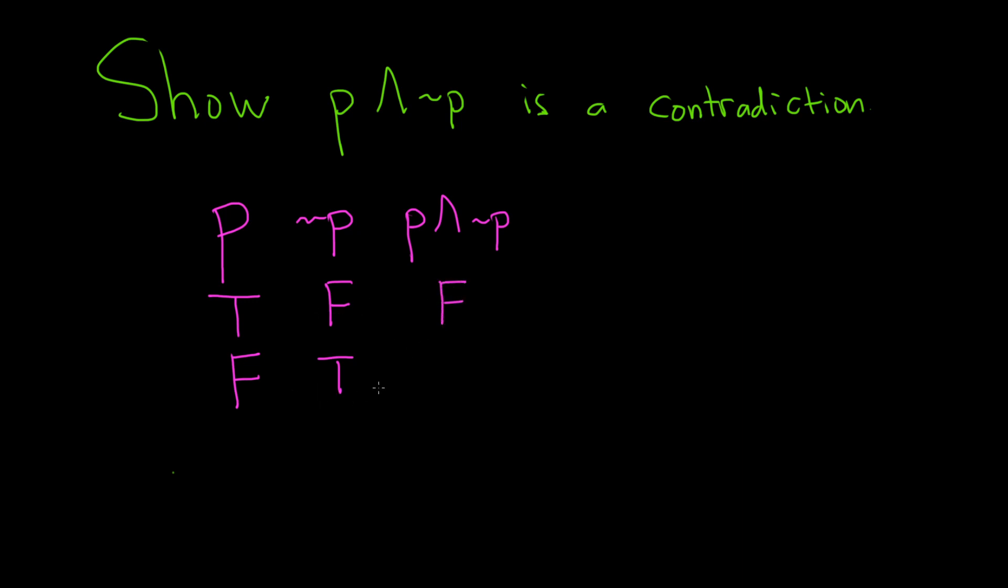In the last case they're not both true, so this is false. And so you see here you get all f's. When you have all f's in the column for what you're trying to verify, then you know it's a contradiction. So this is a contradiction.